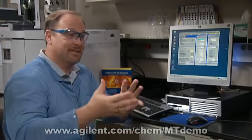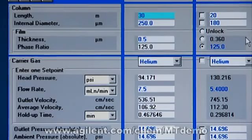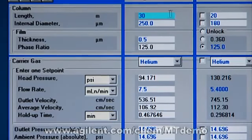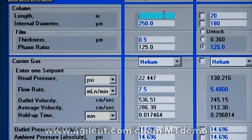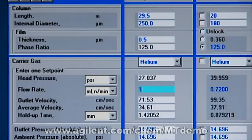Well, you can use the Method Translator to see how that impacts the various lengths as the column gets shorter over time. So instead of putting 30 meters in there, let's try putting 29.5. We've cut off half a meter. Now, let's get our flow rate down to where it's a normal flow rate again, one millimeter.